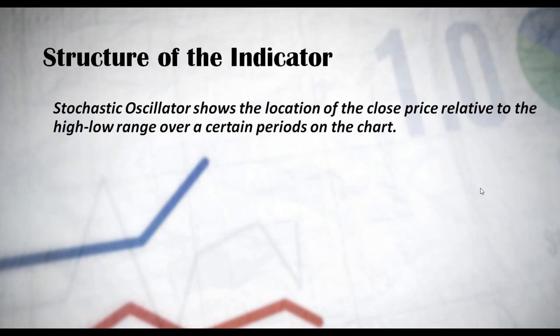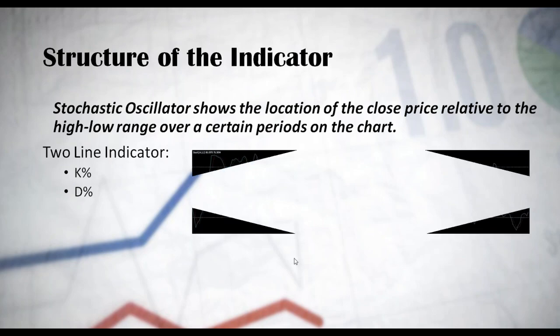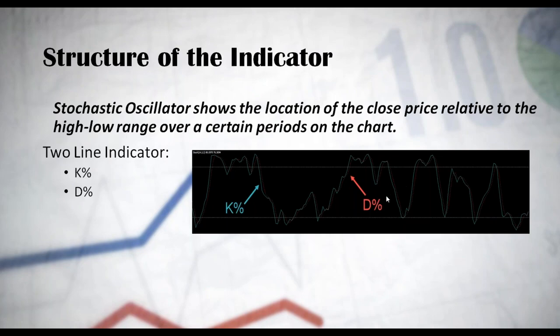The indicator consists of two lines: the K line and the D line. Here is a screenshot from MetaTrader 4 showing how the indicator appears, with the K line and the D line — the D line is dotted. They are usually displayed in blue and red.